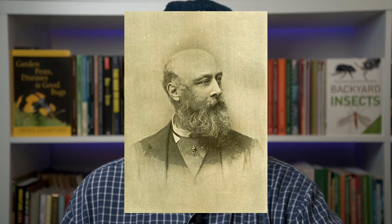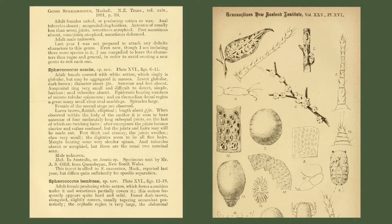Maskell is a bit of an entomological legend because he described many scale insects from around the world. He lived in New Zealand at the time and material was sent to him from all over the globe. Maskell illustrated the Felted Kunzia scale and described it as being globular.